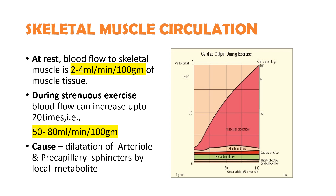Coming to the skeletal muscle circulation: at rest, blood flow to the skeletal muscle is 2 to 4 ml per minute per 100 gram, that is about 750 to 800 ml per minute for the total muscle mass. During strenuous exercise, blood flow can increase up to 20 times, that is 50 to 80 ml per minute per 100 gram muscle tissue, or over 20 liters per minute to the whole body's skeletal muscle mass. This is called exercise hyperemia, caused by local metabolite-induced vasodilation — dilation of arterioles and precapillary sphincters. During exercise, all the dormant capillaries open up, greatly increasing the surface area and rate of blood flow.